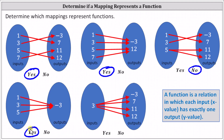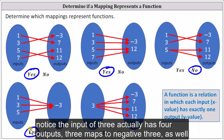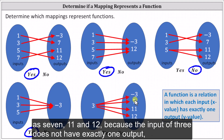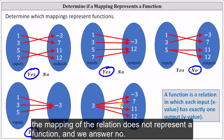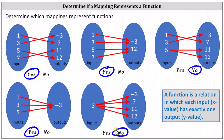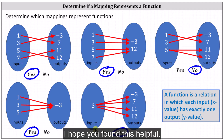For the last example, notice the input of three actually has four outputs: three maps to negative three, as well as seven, 11, and 12. Because the input of three does not have exactly one output, the mapping of the relation does not represent a function, and we answer no. I hope you found this helpful.